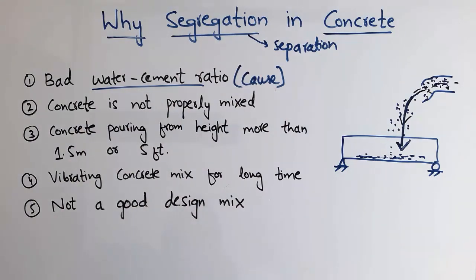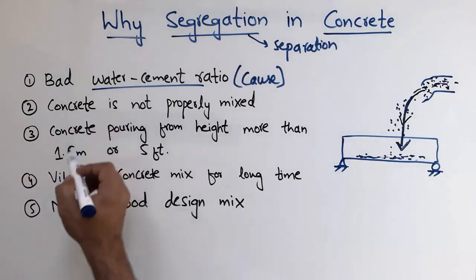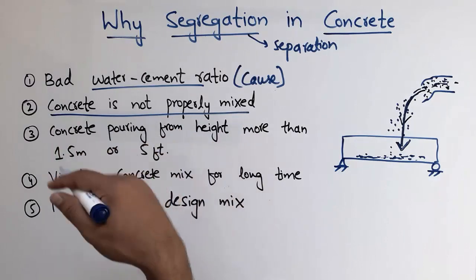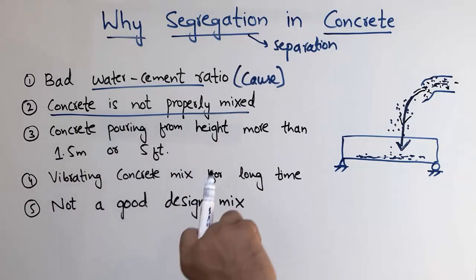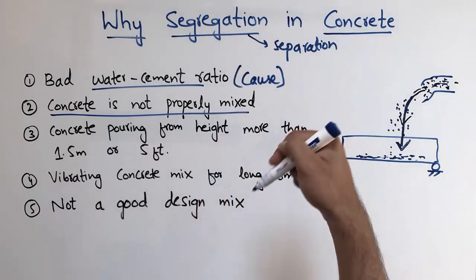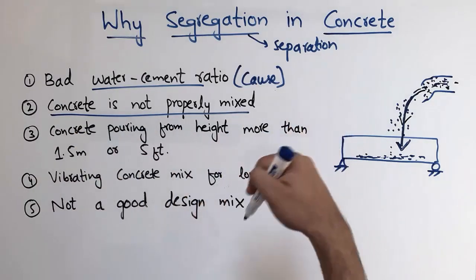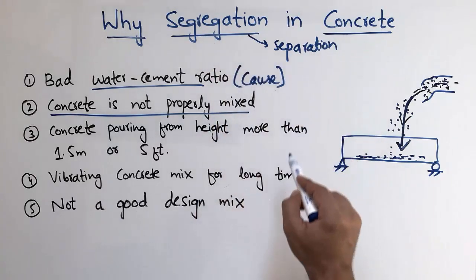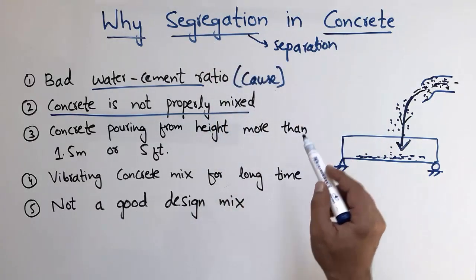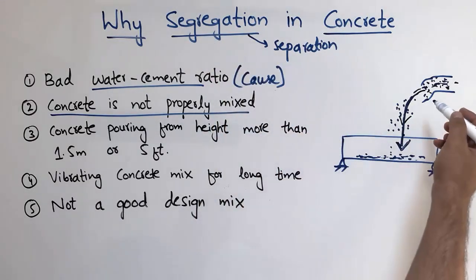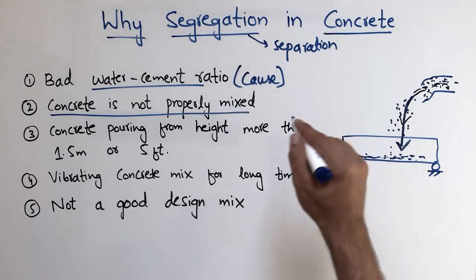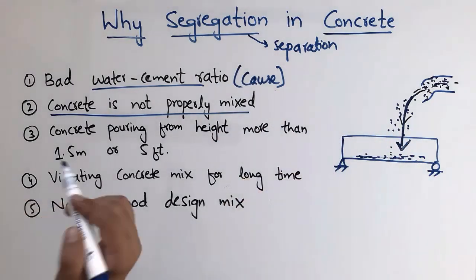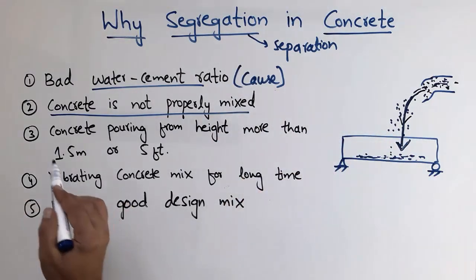The second factor is that the concrete is not properly mixed. When mixing concrete, if we don't allow sufficient time for mixing, that is why we find segregation in the concrete. If you have a proper concrete mix, there will be fewer chances of segregation.